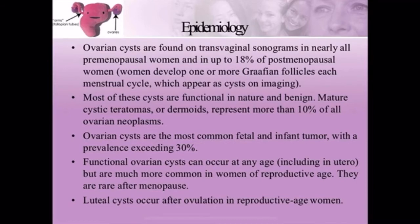Regarding epidemiology, ovarian cysts are found on transvaginal sonograms in nearly all premenopausal women and in up to 18% of postmenopausal women. Most of these cysts are functional in nature and benign. Mature cystic teratomas, or dermoids, represent more than 10% of all ovarian neoplasms. Ovarian cysts are the most common fetal and infant tumor, with a prevalence exceeding 30%.